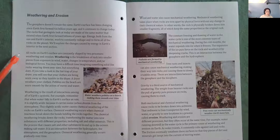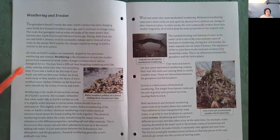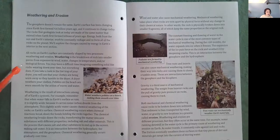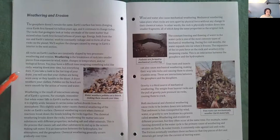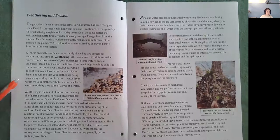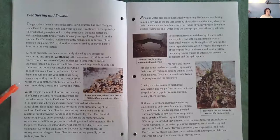All rocks on Earth's surface are constantly shaped by two processes, weathering and erosion. Weathering is the breakdown of rock into smaller pieces from exposure to wind, water, changes in temperature, and or biological forces. You may have a difficult time imagining something solid like rocks wearing down over time, but everything does. If you take a look in the lint trap of your dryer, you will see that your clothes are being worn away as they tumble in the dryer. A dryer weathers your clothes.